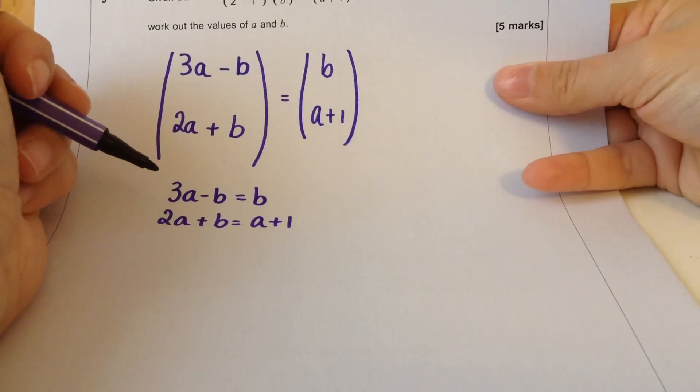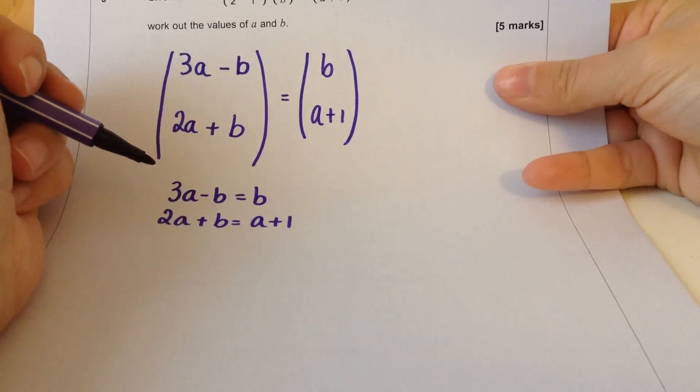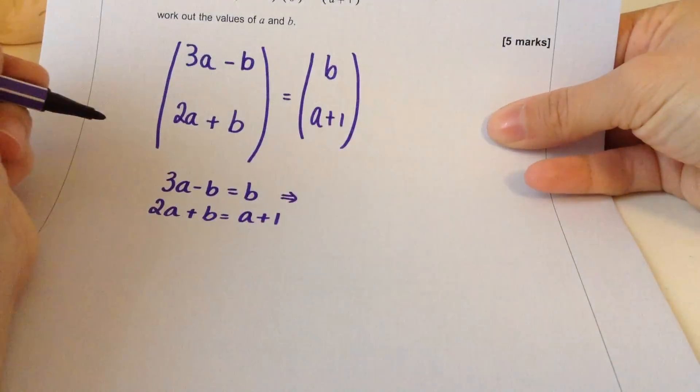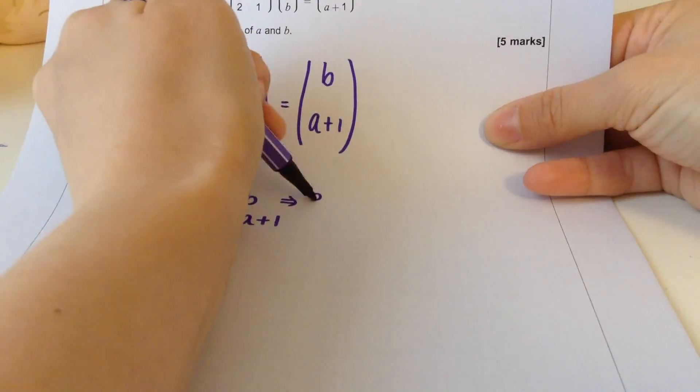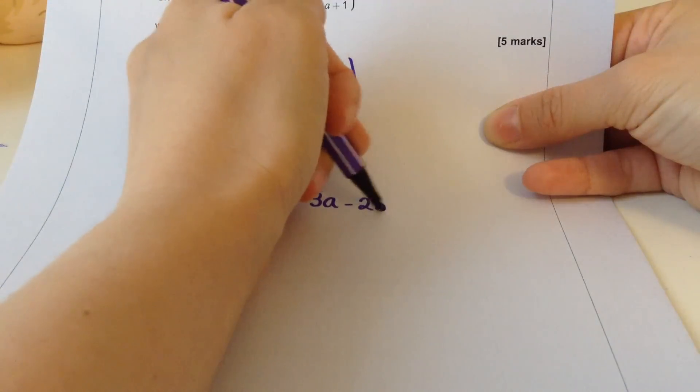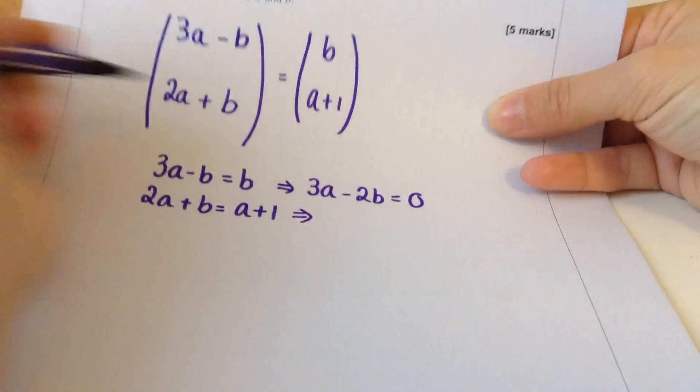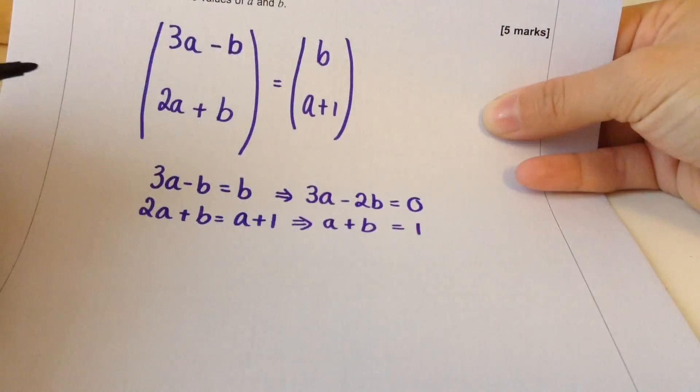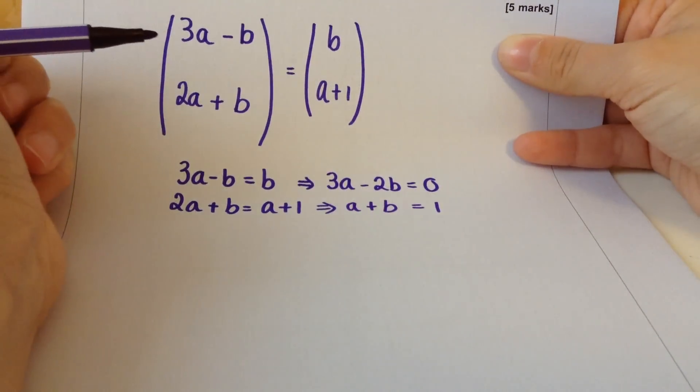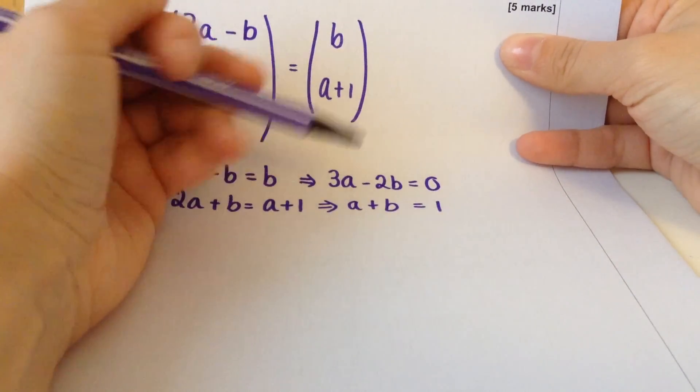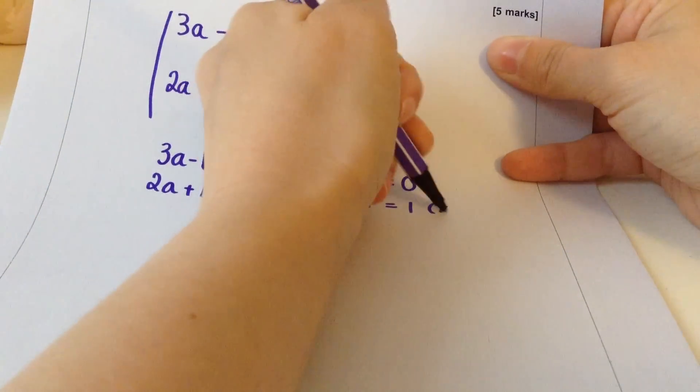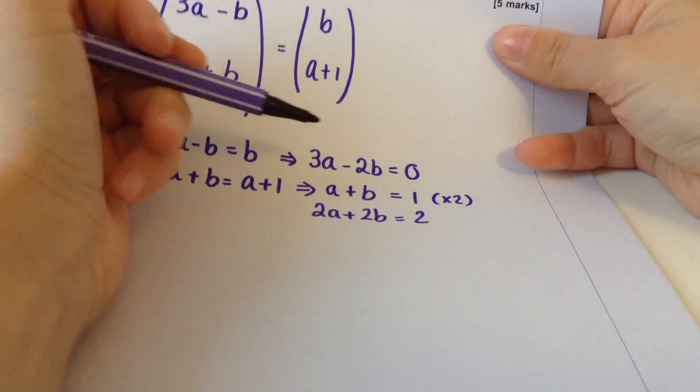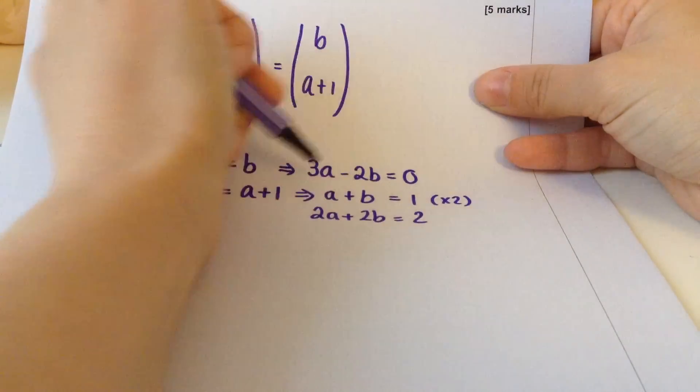Let's rearrange them. I'm trying to think if I want to do elimination or substitution. Let's make them look like this. I'm going to take away b from both sides, and then this one, I'm going to take away a from both sides. So I could double this equation. I'm going to times this one by 2.